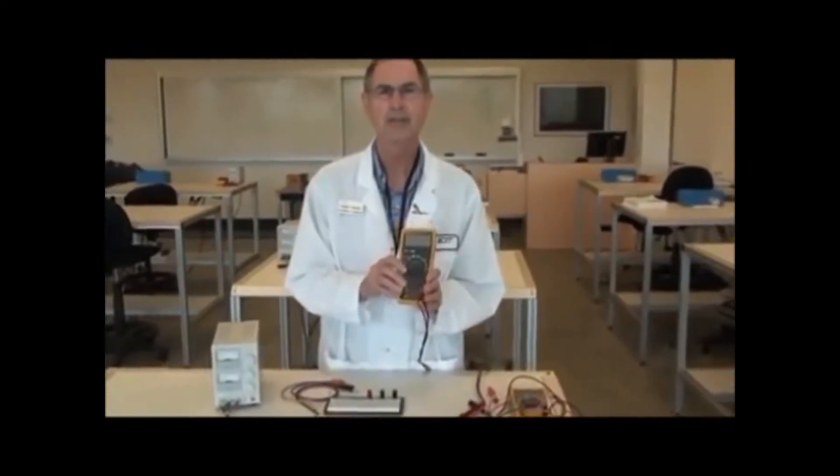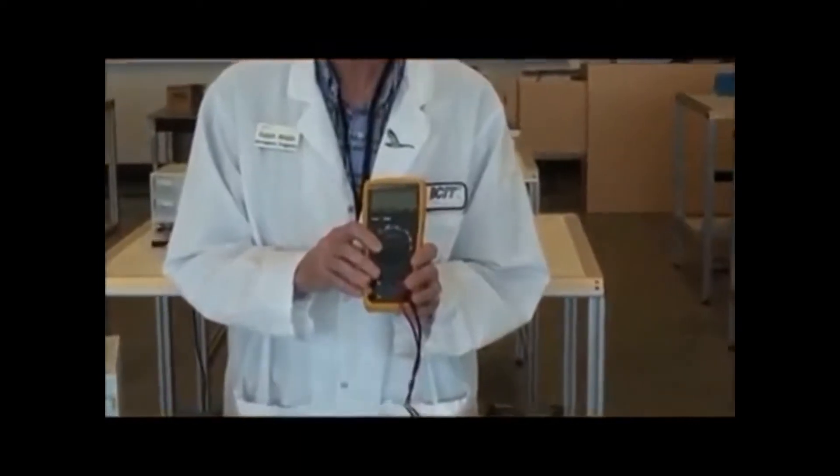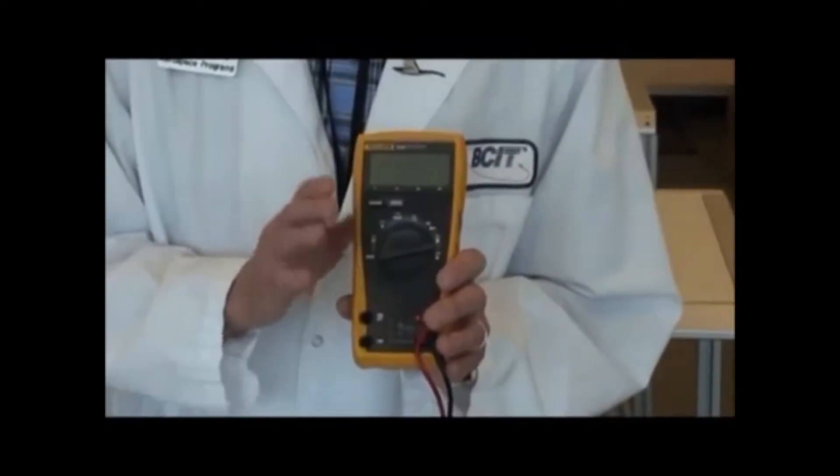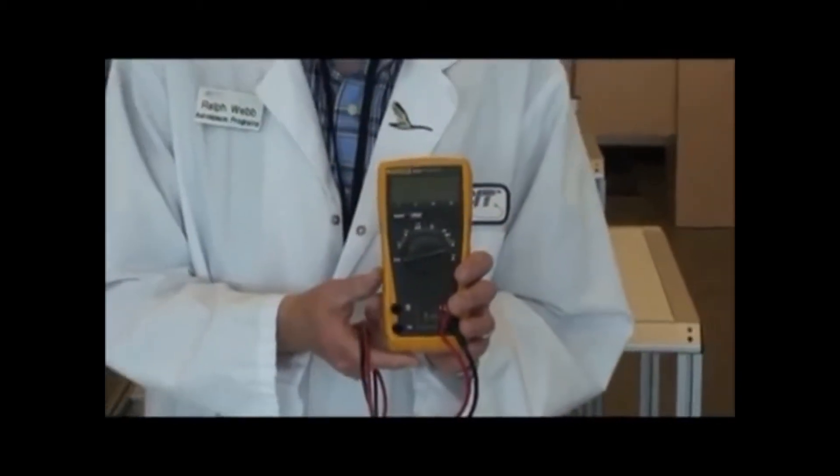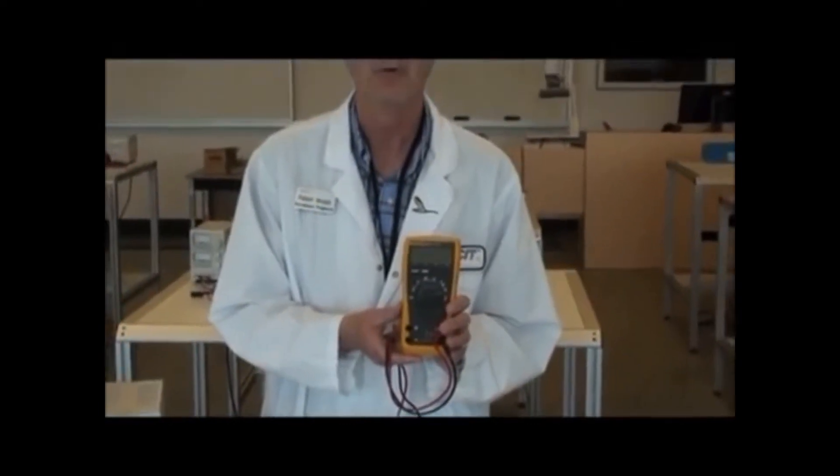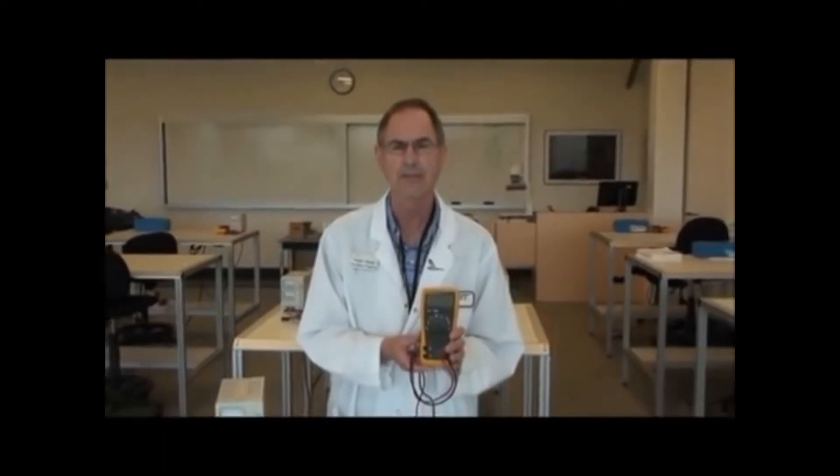This Fluke digital multimeter is a general purpose meter. It is fairly sophisticated with some advantages over other meters, but it is a fairly basic meter as far as digital multimeters go. Most meters will have the functions we are looking at for measuring these basic functions for this DC supply.